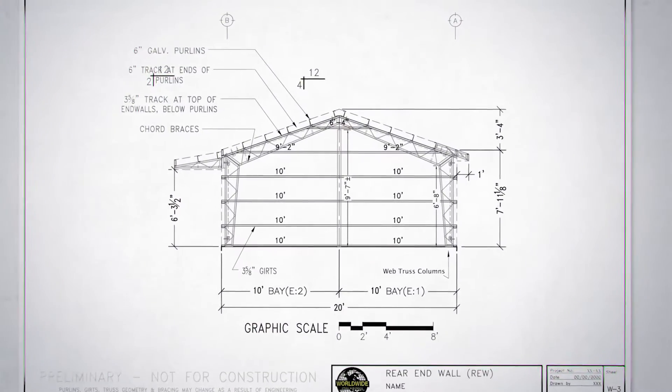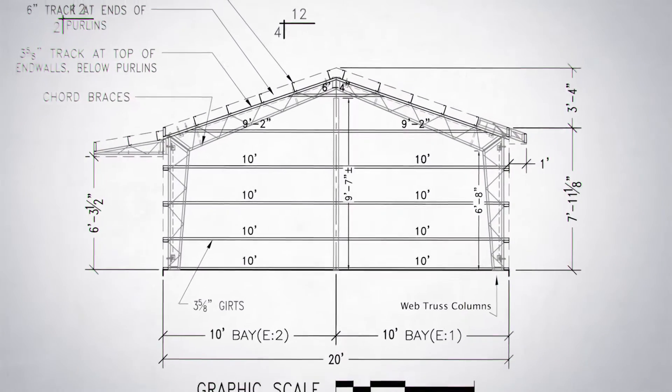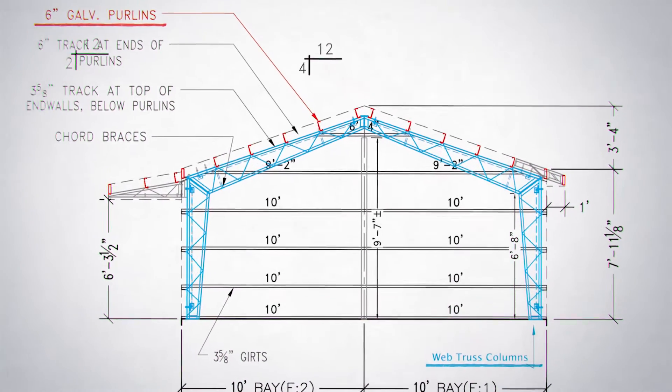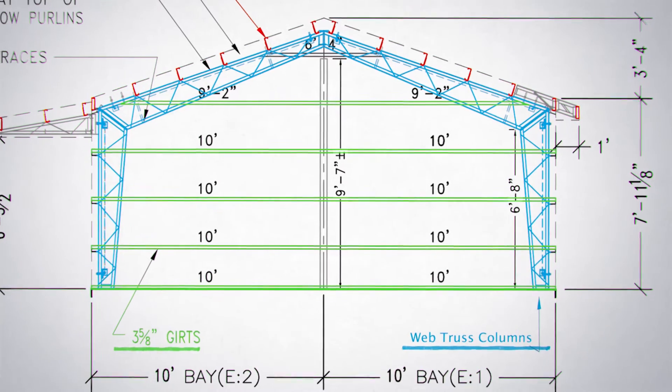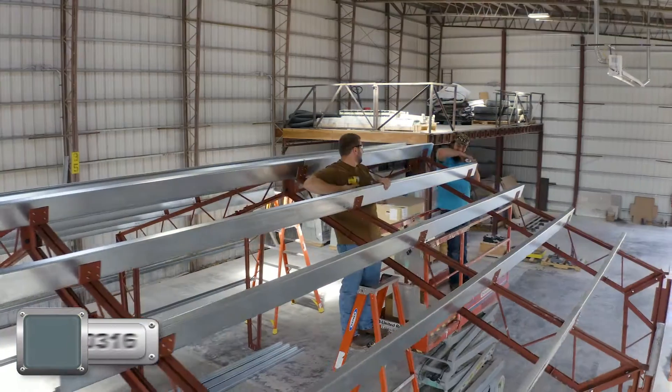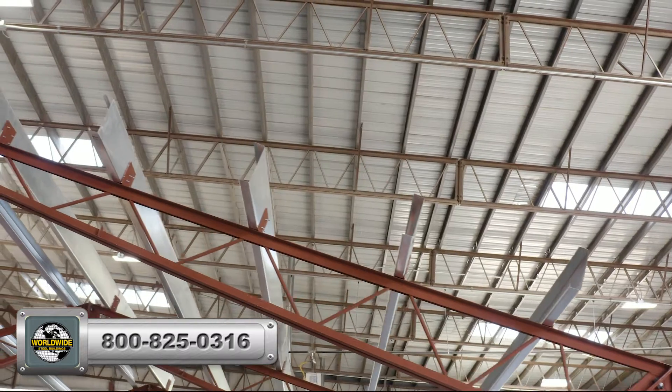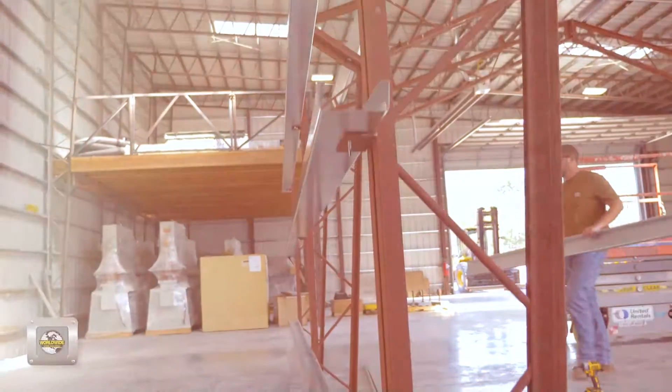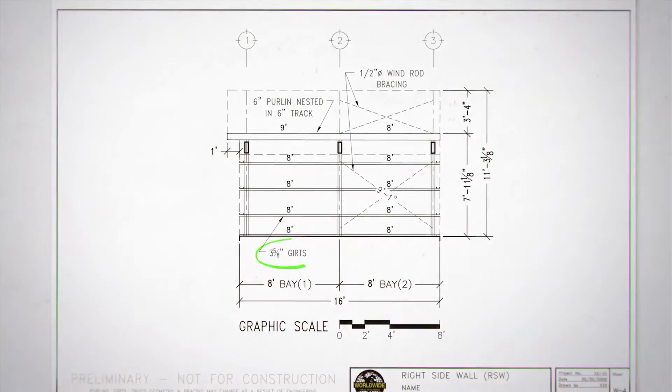It's important to note that in this example, we are using Worldwide Steel Buildings web truss columns and roof trusses with 6-inch purlins on the roof and 3-5-8-inch girts on the walls. If your building kit has different components than noted, the dimensions you need to use may vary from this video. Please verify the dimensions with your W drawings.